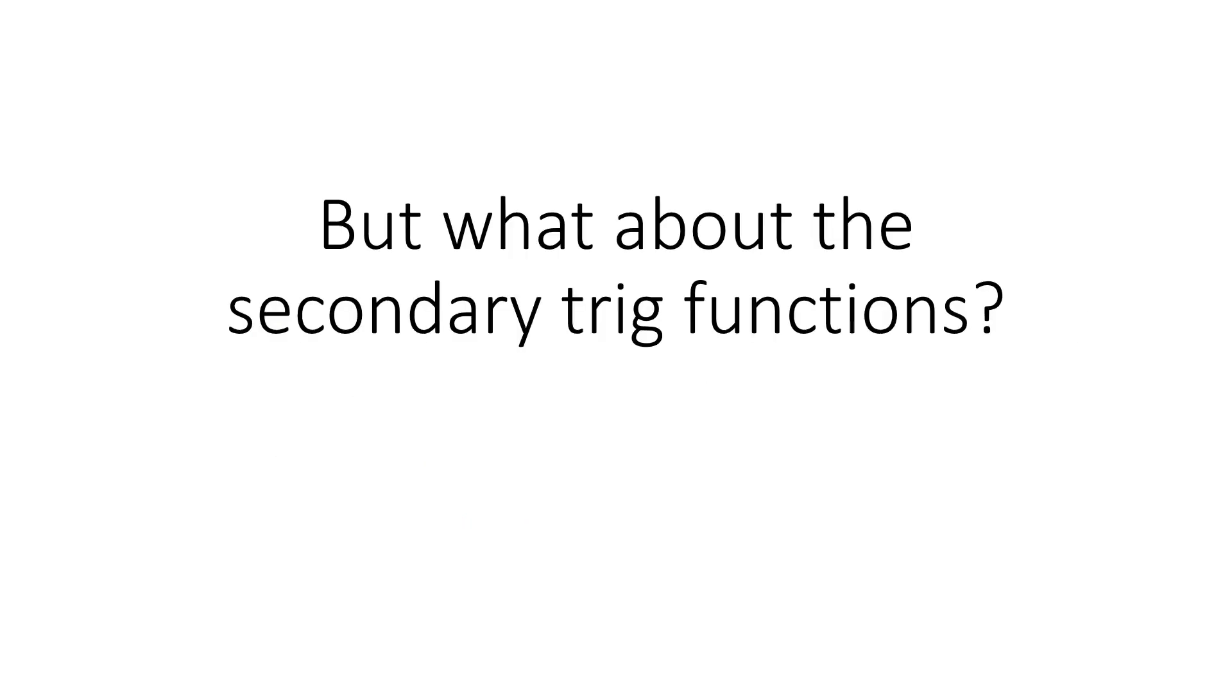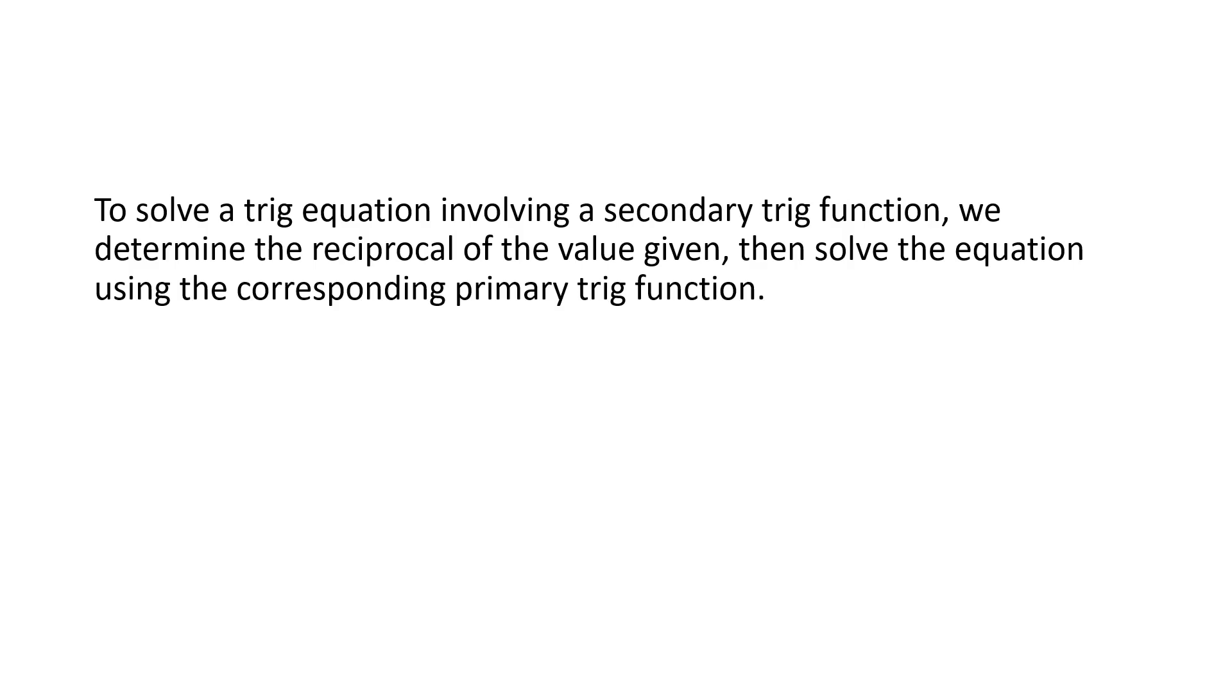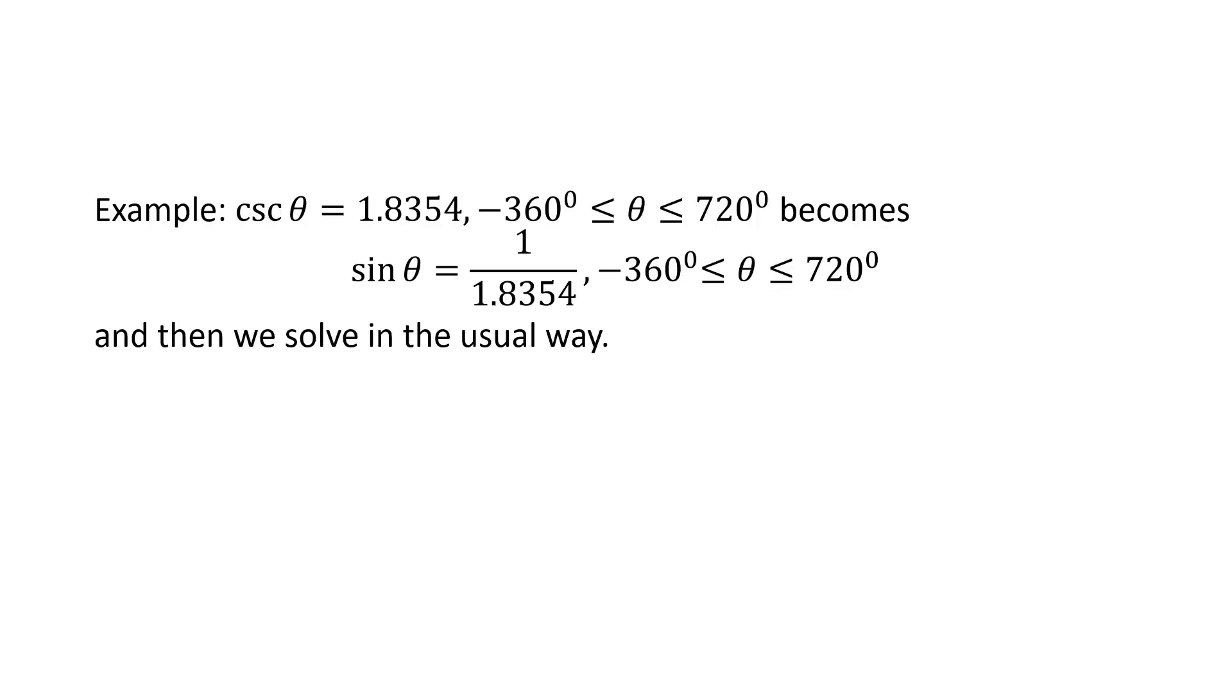Now, what about the secondary trig functions? Well, to solve a trig equation involving a secondary trig function, all we do is we recall that the reciprocal, like for instance, this one here, cosecant theta equals 1.8354. We're going to take the reciprocal of the left-hand side, the reciprocal of cosecant theta is sine theta, and we're going to take the reciprocal of 1.8354, which is 1 over 1.8354. So basically, all we're saying is that sine theta is equal to 1 over 1.8354. Well, 1 divided by 1.8354 is roughly the same as 0.5448.